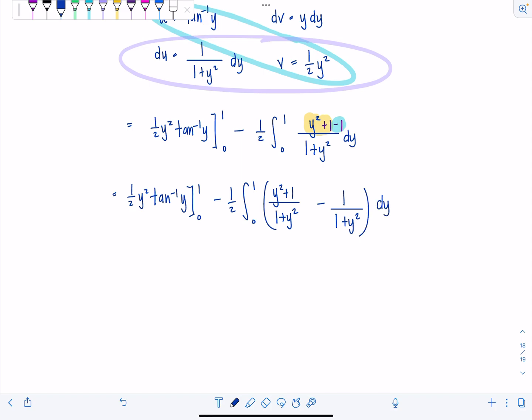And then maybe now you're kind of noticing what we can do. So y squared plus 1 over 1 plus y squared, that's just 1.